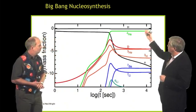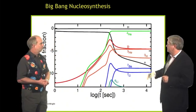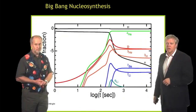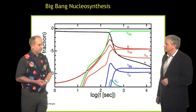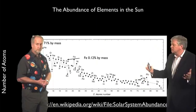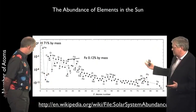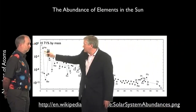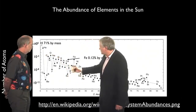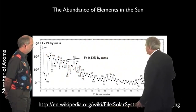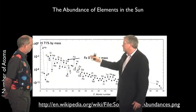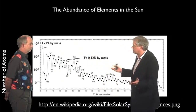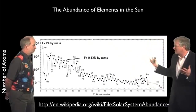So we end up with three parts hydrogen, one part helium, and one part in 100,000 of everything else — almost nothing but hydrogen and helium in the universe. And yet when we look at what's in the sun, we see that sure, the sun is largely made out of hydrogen at 71%, and it has about 25% helium. But then there's all this other stuff — 0.12% of the sun is iron. And iron wasn't made in the Big Bang, so we have to figure out how that stuff got here.